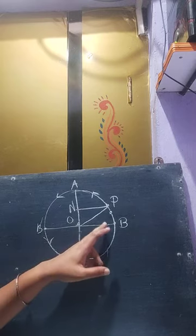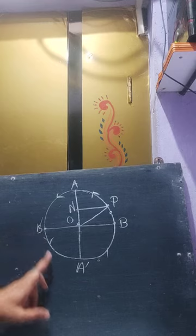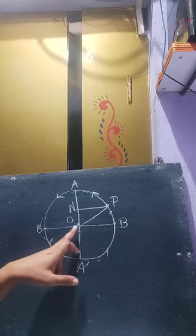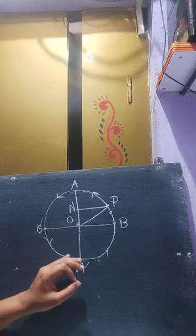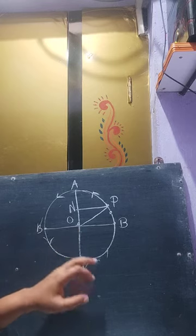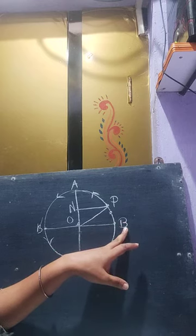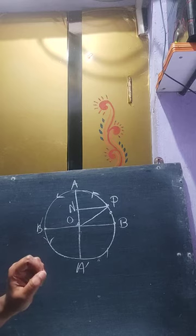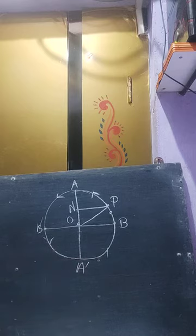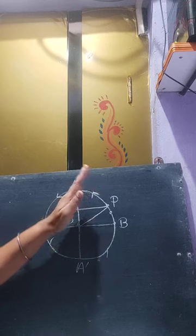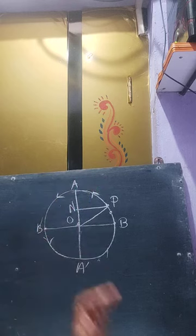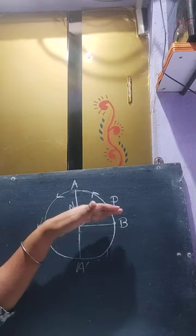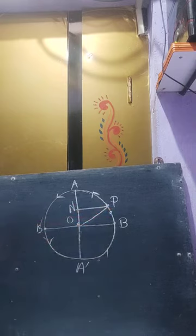When the particle goes along the circumference from B' to A', the projection moves along the diameter from O to A'. When the particle moves from A' to B, the projection moves from A' to O. Thus, the projection N moves in a straight line, to and fro about point O.